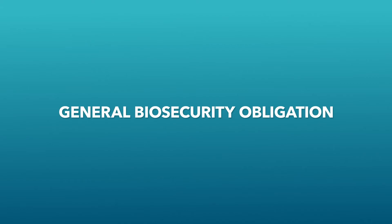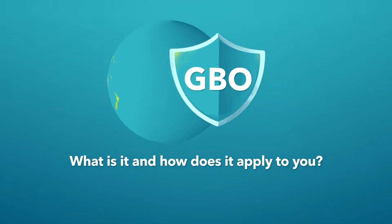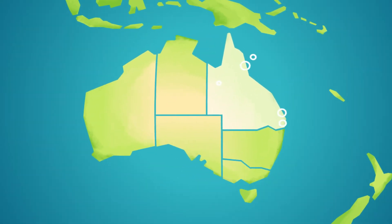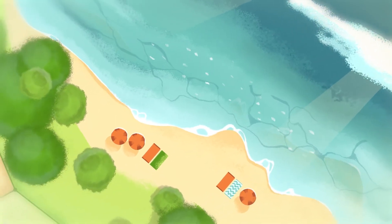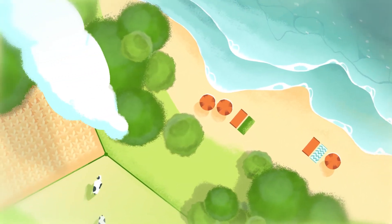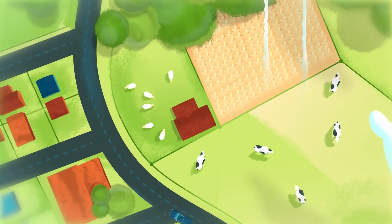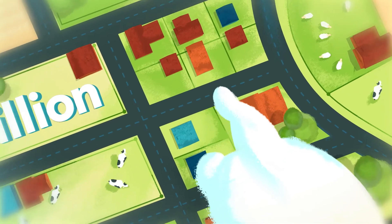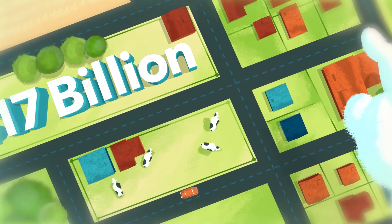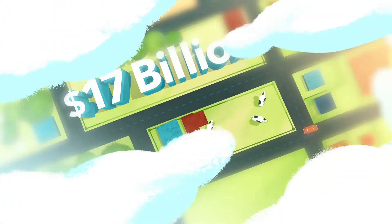General biosecurity obligation — what is it and how does it apply to you? Queensland, home to five World Heritage sites, pristine beaches and known for its clean and high-quality produce, it's a natural wonderland for residents and tourists alike. With our plant and animal industries generating more than 17 billion dollars to the state's economy each year, Queensland is on the biosecurity front line.